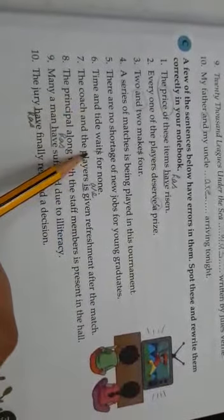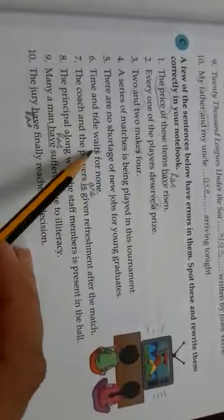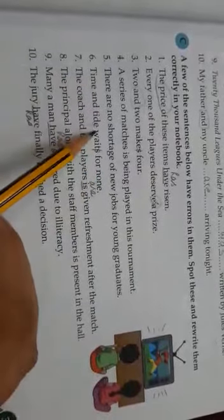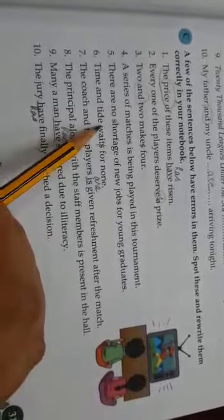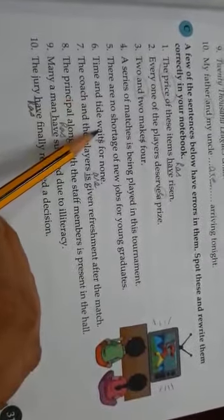Time and tide wait for none. Again, we will omit S as these are two subjects with the conjunction AND. So, they will take a plural verb.